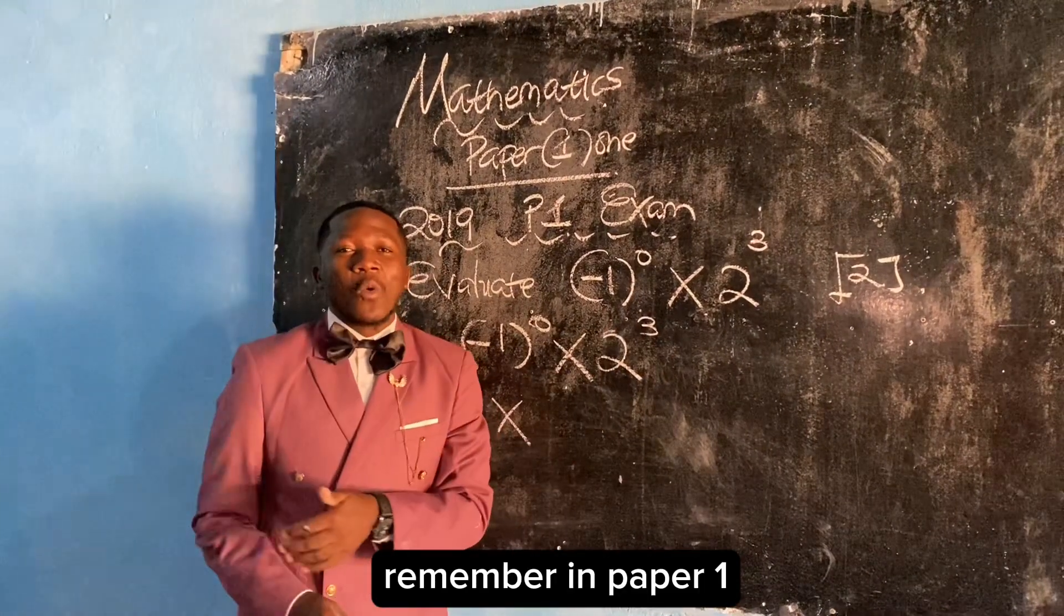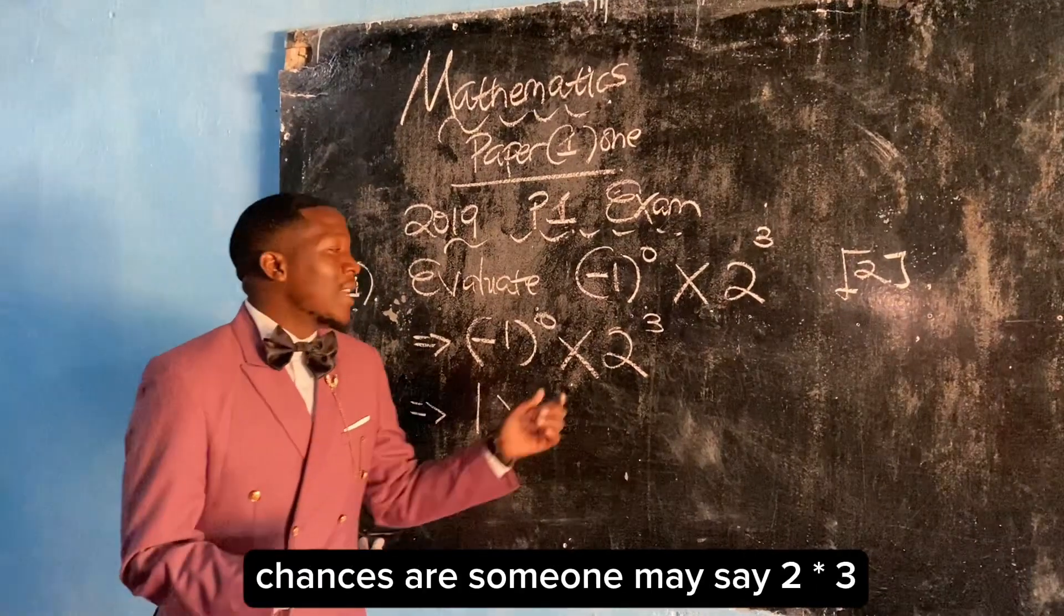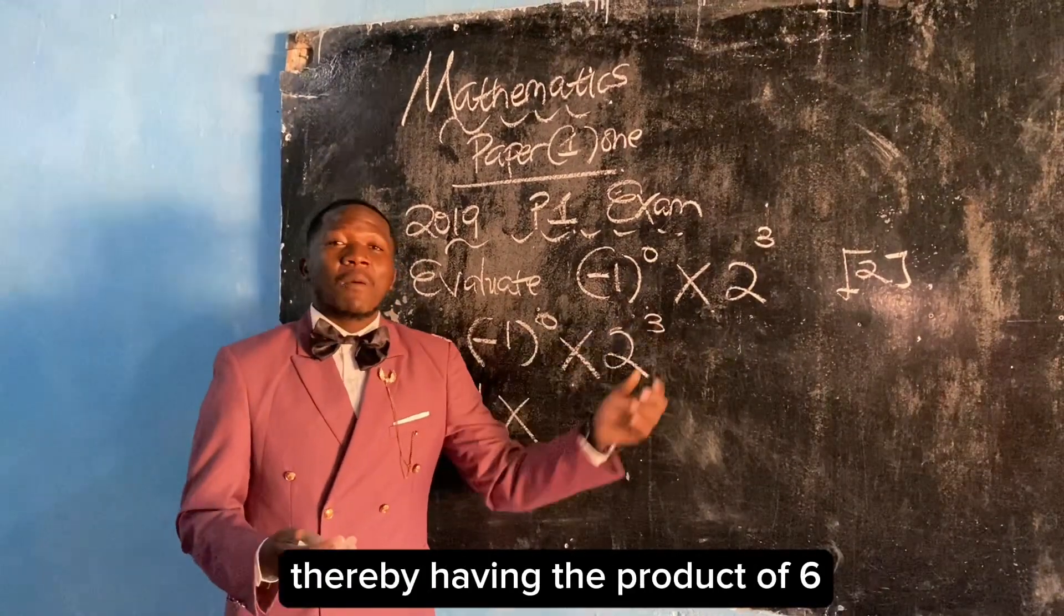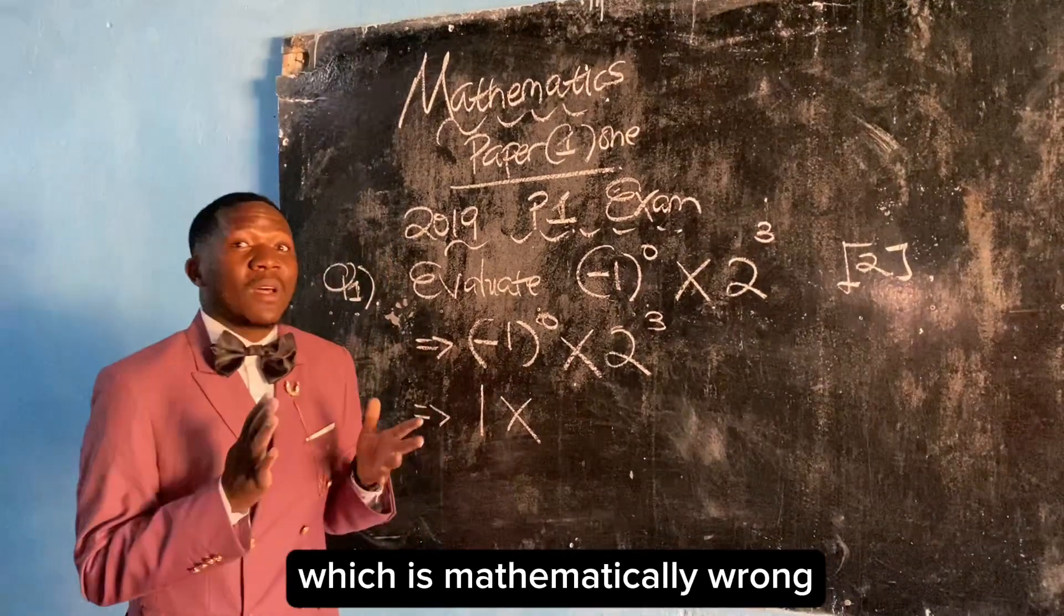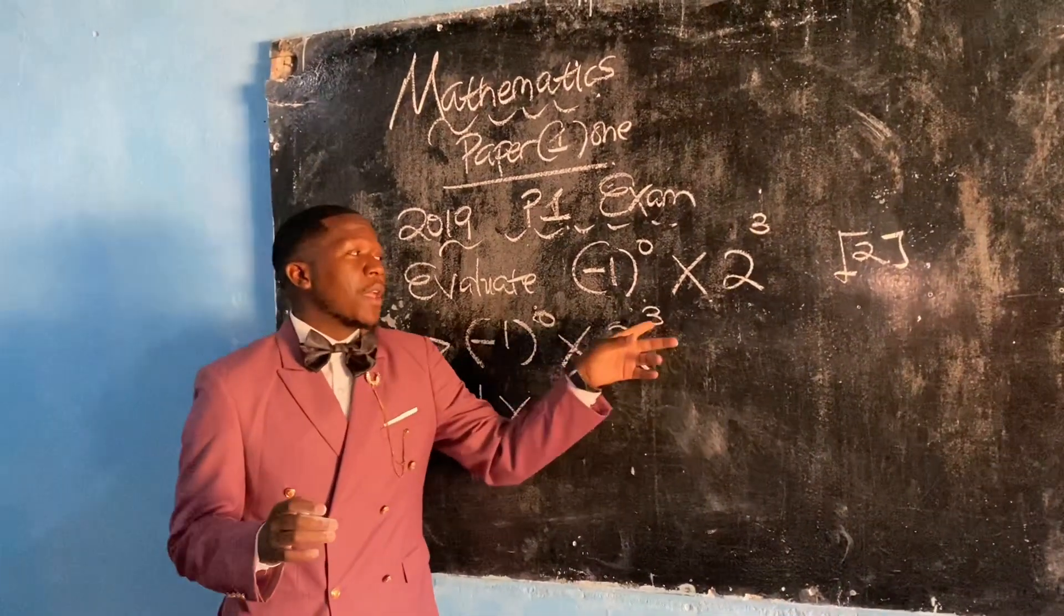Remember, in paper 1, there is no use of the calculator. Chances are someone may say 2 times 3, thereby having the product of 6, which is mathematically wrong. When we say 2 to the power 3...